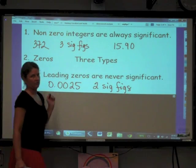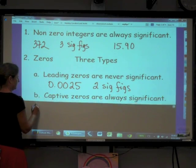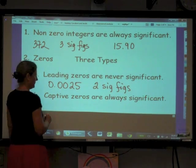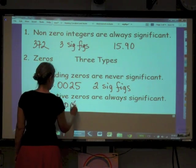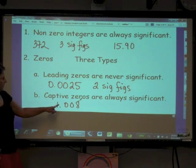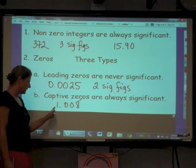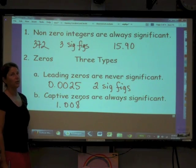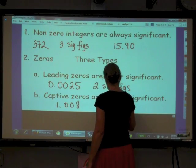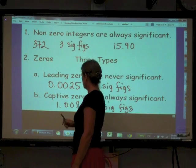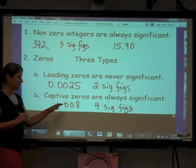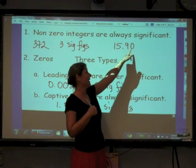This isn't a leading zero though. So we still don't know what it is. Captive zeros are always significant. So for instance, 1.008. How many significant figures here? So these zeros are captive between integers. So that means that these zeros are significant. So we say that this number has four sig figs. But still, this is not a captive zero. So we have not addressed that zero yet.